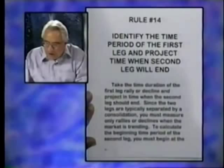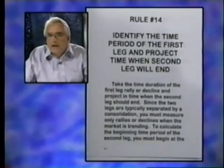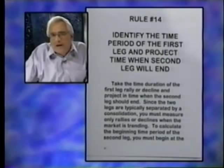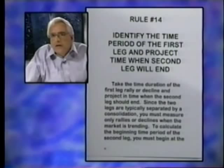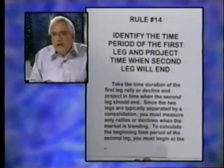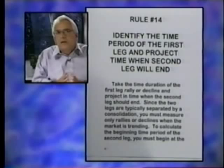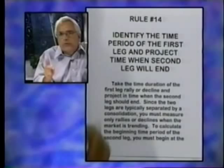In Rule 14, we identify the time period of the first leg and project the time when the second leg will occur — this is how much time it takes for the trend to develop. If you have a seven-minute first leg, you'll probably get a seven-minute second leg. Every day is time-specific: you'll find certain days when the same numbers come up over and over. For instance, a nine-minute rally followed by another nine-minute leg, then nine-minute breaks in the afternoon. The next day there'll be no nine-minute breaks — there'll be twelve-minute rallies. Pay attention to the predominant time interval in minutes on any given day.